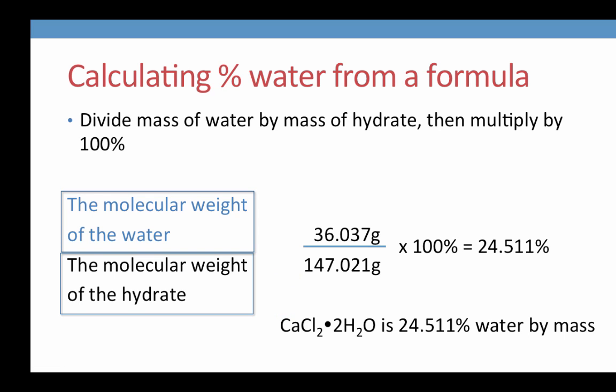We now take the ratio of the molecular weight of the water over the molecular weight of the hydrate and multiply by 100 to give an expression in percent. 36.037 divided by 147.021 times 100% yields 24.511 percent. Therefore, calcium chloride dihydrate is 24.511 percent water by mass.